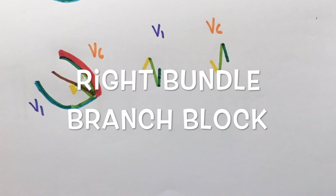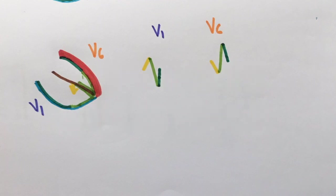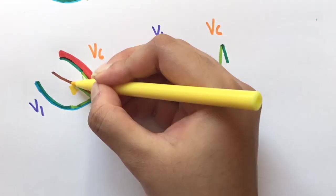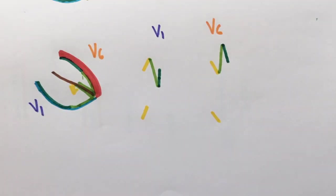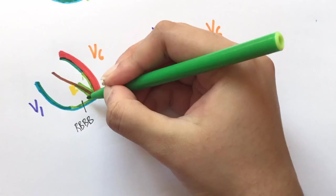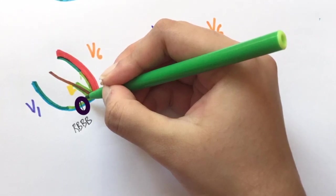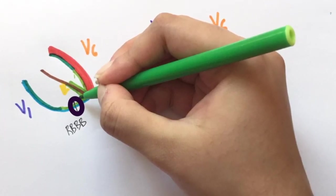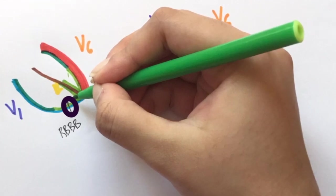In patients with right bundle branch block, the septal current is the same. So the first part is normal in both V1 and V6. When impulses start travelling further, the left side is normal so it is pretty smooth. But there is a block right here.